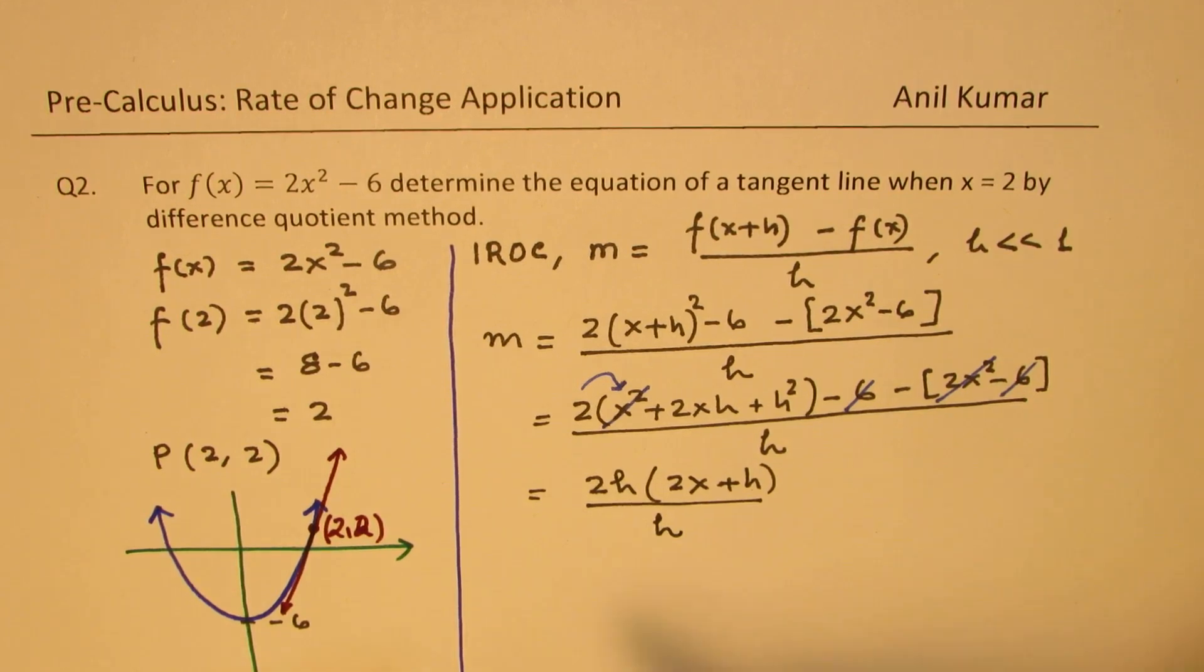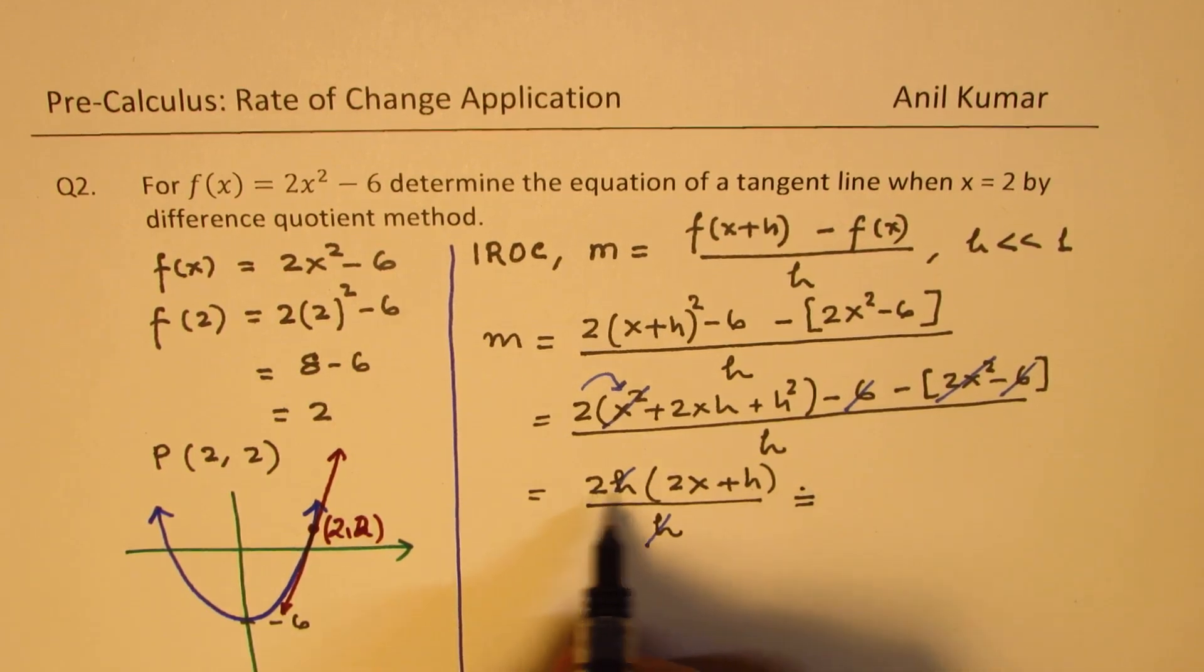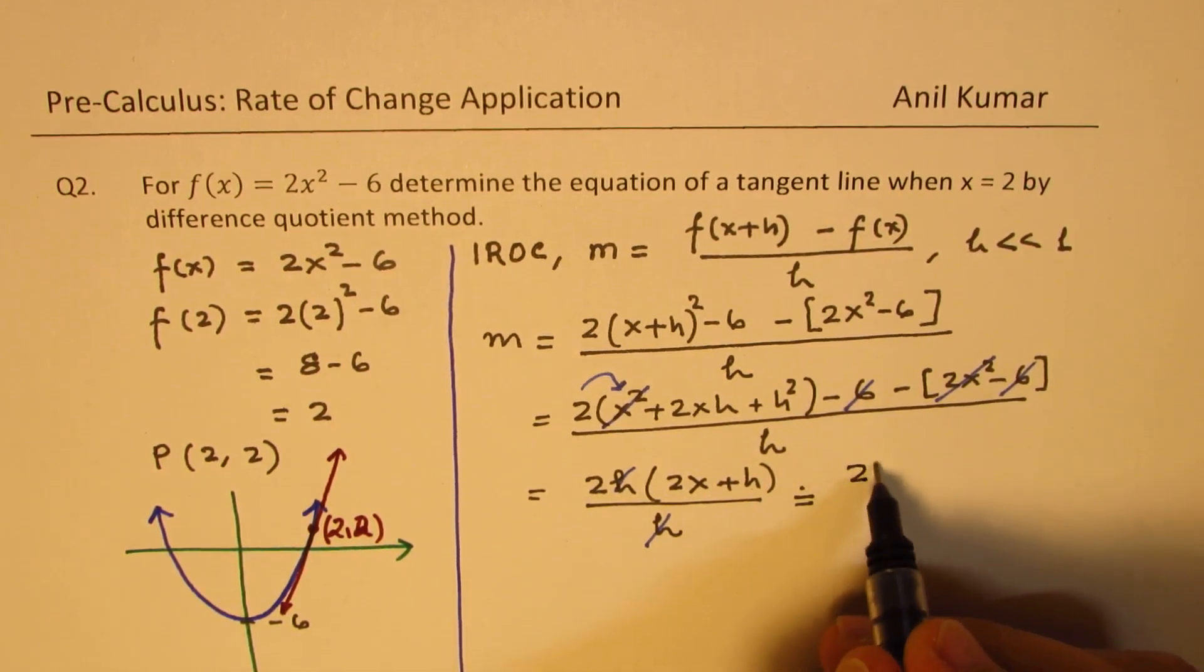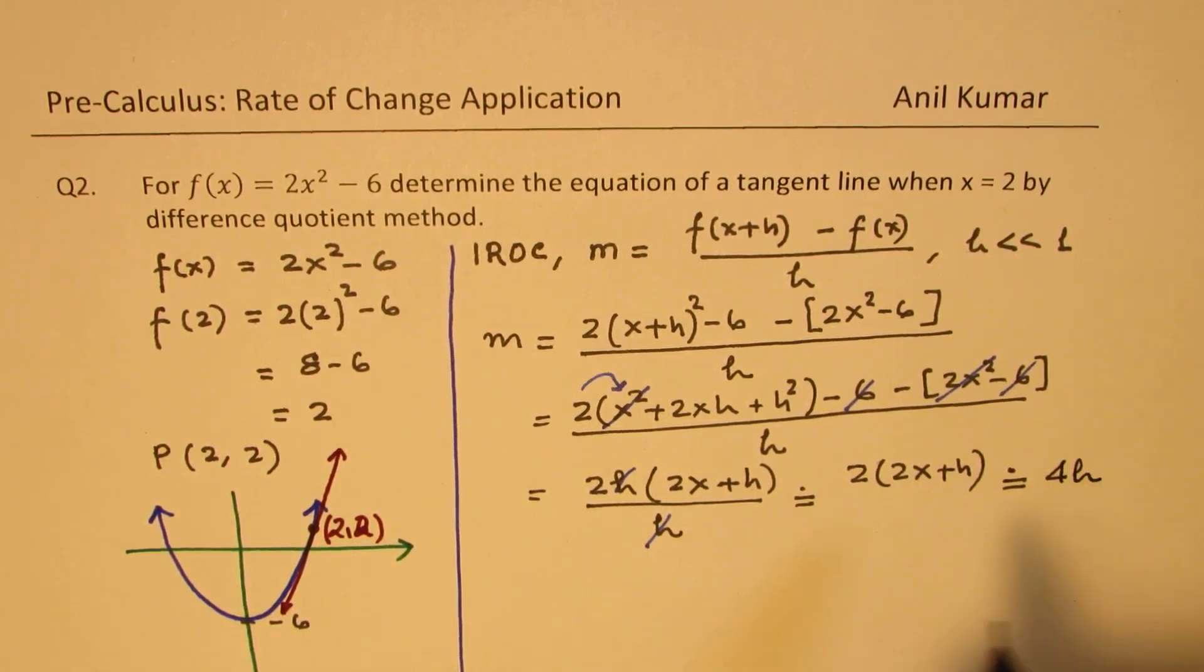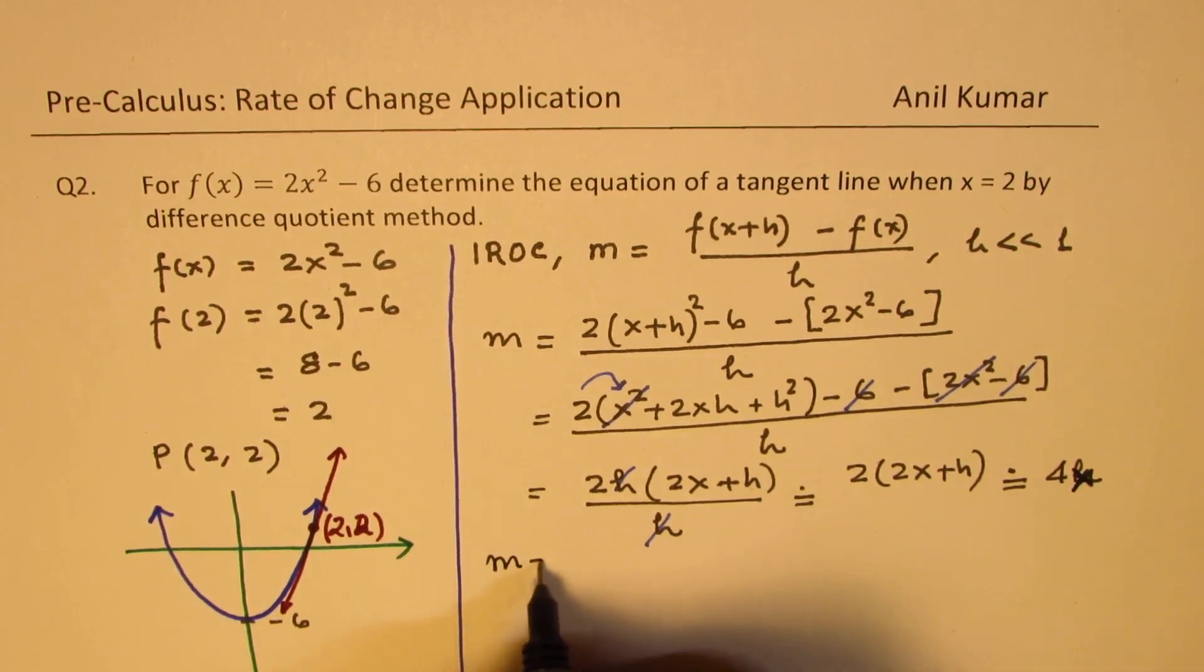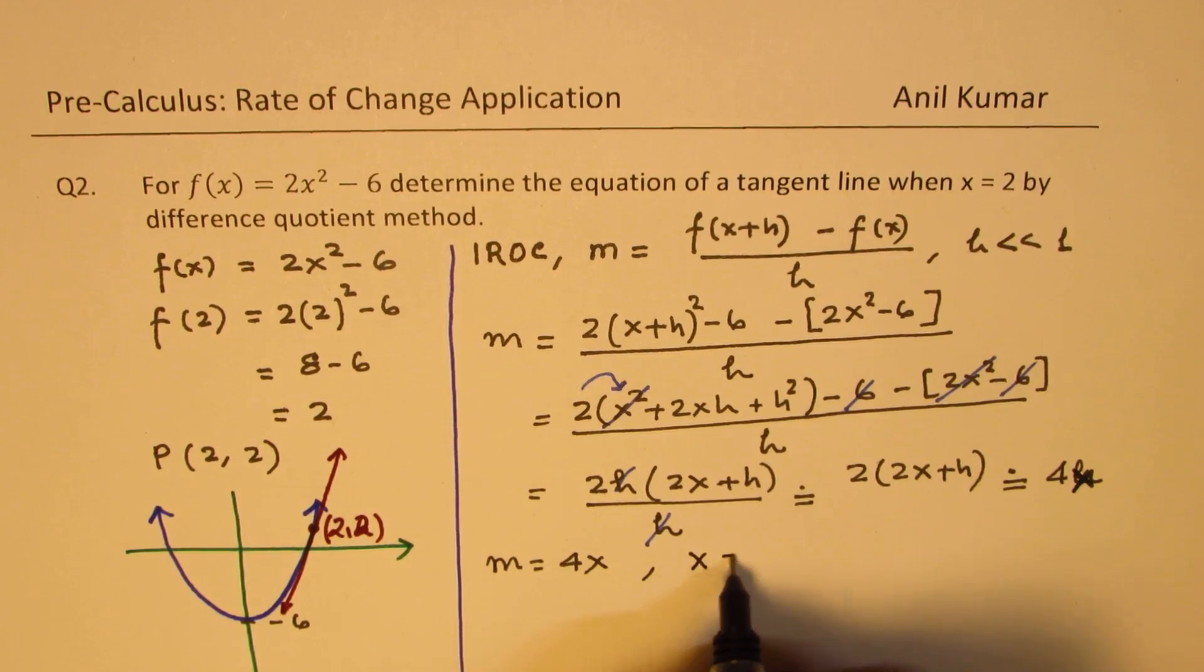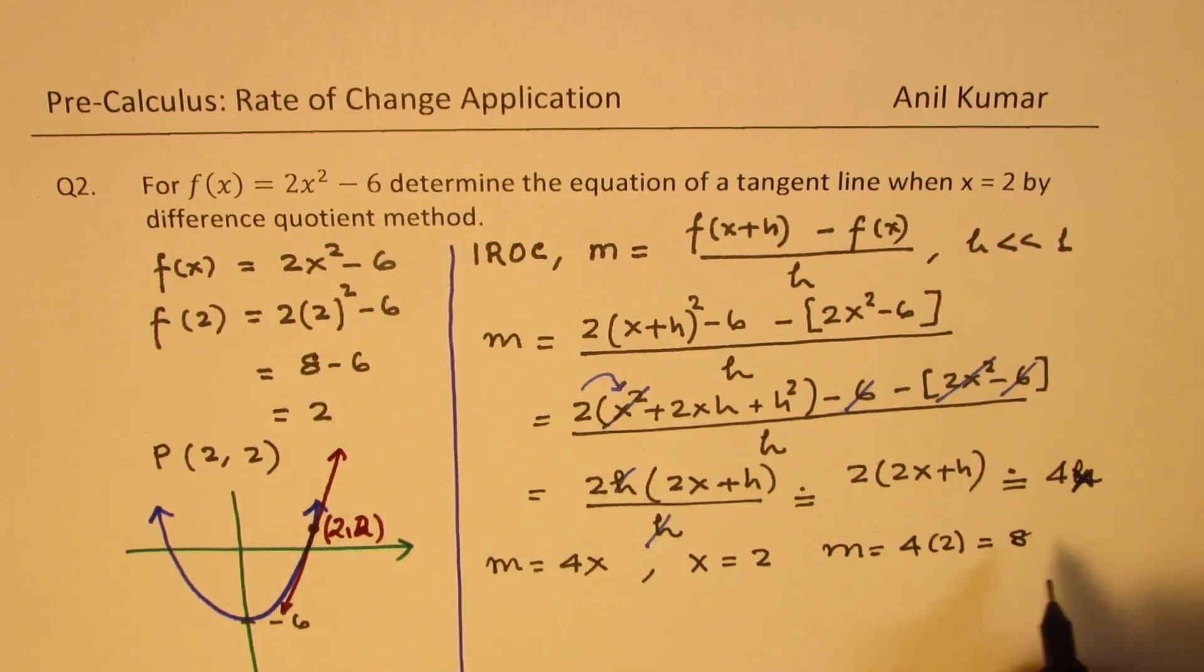So now we could cancel these. And we know this h is very small. So approximately, we can write this as 2 times 2x + h, which is approximately equals to 4x. So at any point on this curve, the slope is 4 times x. So we get slope equals to 4x. Now when x equals to 2, m equals to 4 times 2, and we get the value as 8. So we know the slope is 8.